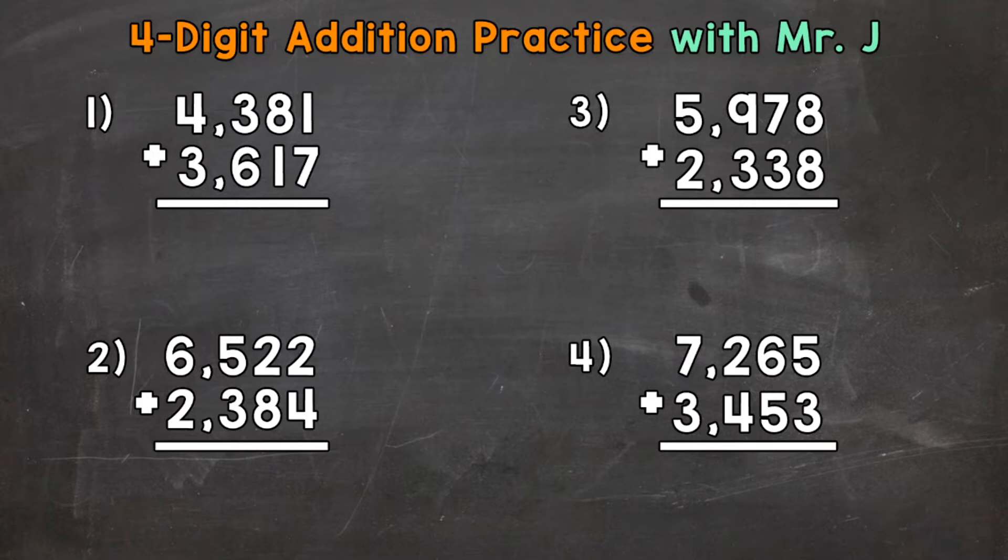Now, in this video, we're going to be working with four-digit numbers. So let's jump into number one, where we have 4,381 plus 3,617. When we add whole numbers, we always start with the ones place. So we have 1 plus 7 ones. That gives us a total of 8 ones. So we have an 8 in the ones place.